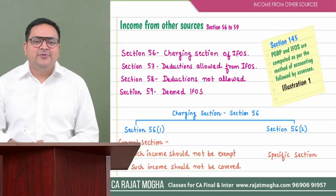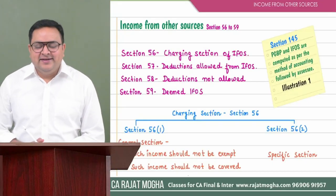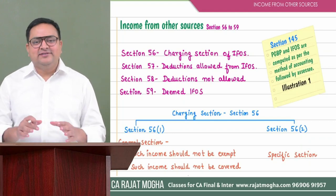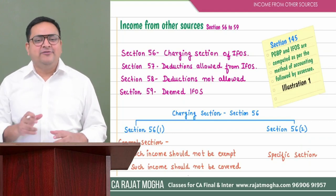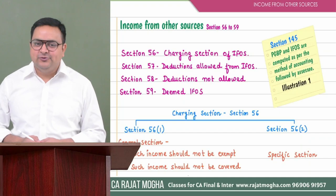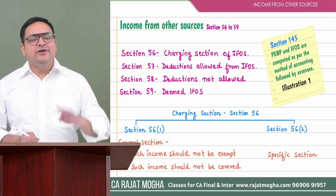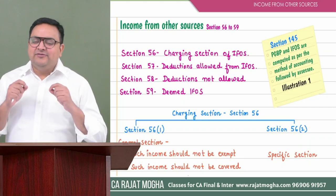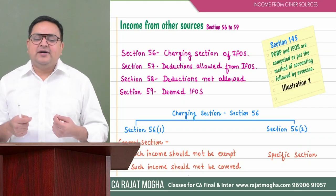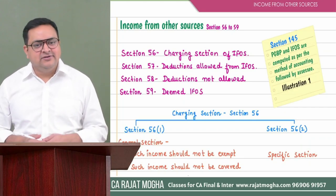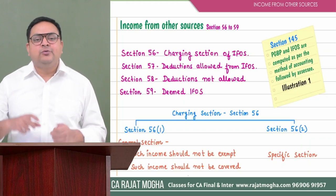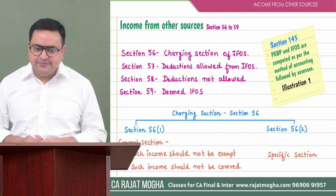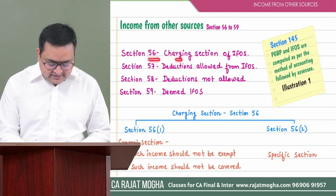Hi everyone, hope you all must be doing great. So today we are starting with another important chapter. This is one of the smallest chapters among all 5 heads — IFOS, Income from Other Sources. It consists of only 4 sections. The first section is Section 56, which is the charging section of IFOS.